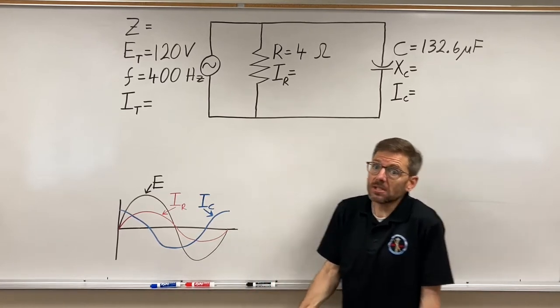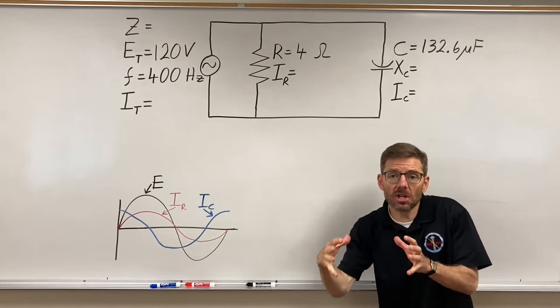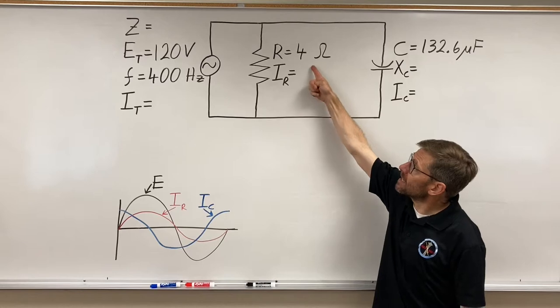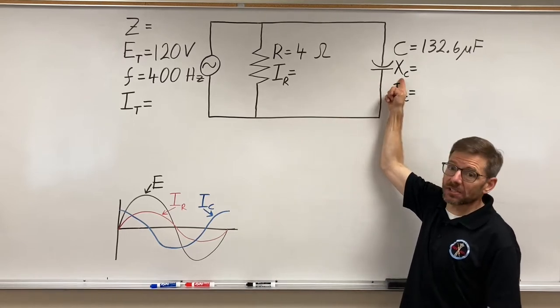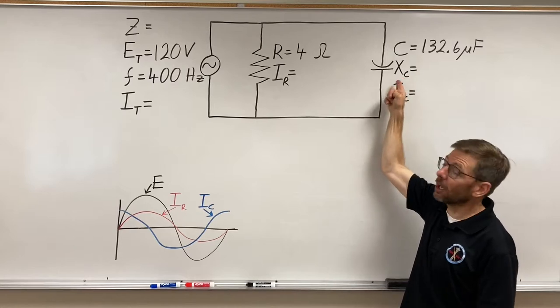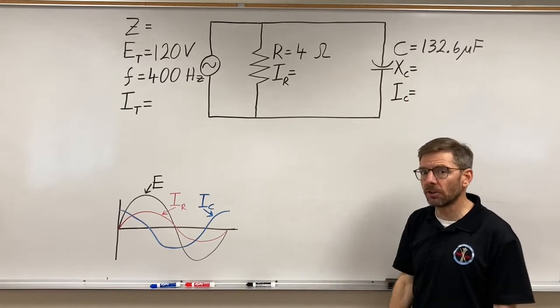And what I need to do is, it's kind of that product sum and Pythagoras mashup in the formula of my resistance and my XC, my capacitive reactance. So I need to calculate that first. Quick reminder on how to do that.